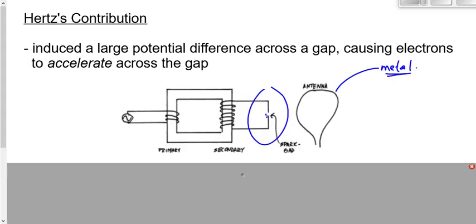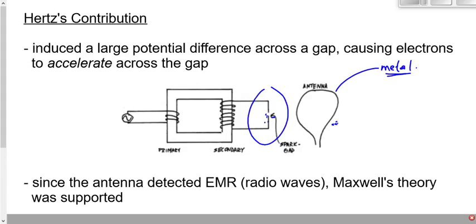So the idea here is this. If Hertz observes a current in the antenna, if he measures a current in the antenna, then that must mean that there was a changing electric and a changing magnetic field. And those two fields must have been caused by the accelerating charge. And that's Maxwell's theory, right? If he detects an electric current right here, then Maxwell's theory must be right. We must have a changing electric field and a changing magnetic field, and it must have been caused by the accelerating charge across that gap.